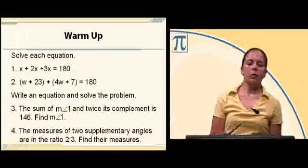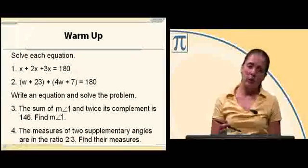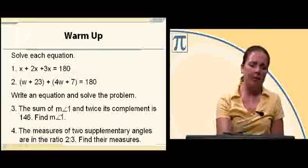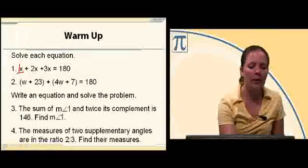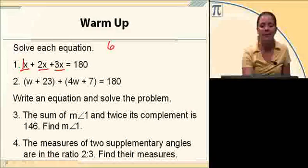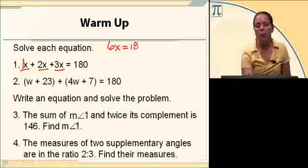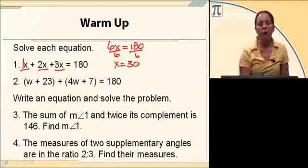This first one says x plus 2x plus 3x equals 180. Well, x is the same as 1x, so I have 1x plus 2x plus 3x. That's 6x equals 180. Divide both sides by 6. x equals 30.